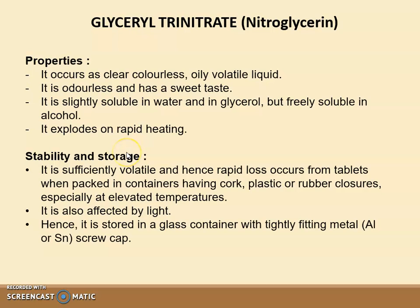Stability and storage conditions: glyceryl trinitrate is sufficiently volatile and hence rapid loss occurs from the tablet when packed in a container having cork, plastic, or rubber closure, especially at elevated temperature. It is also affected by light, hence it is stored in a glass container with a tightly fitted metal — i.e., aluminium or tin — screw cap.